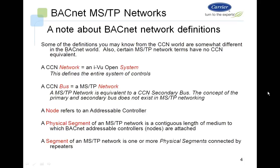We will look at some network definitions on the BACnet side as compared to the CCN side. A CCN network is equivalent to an iView Open system — this defines the entire system of controls for a given installation. A CCN bus is equivalent to an MSTP network, which is equivalent to what we've typically referred to as a CCN secondary bus. The primary 485 bus doesn't exist in the BACnet world; the best correlation would be the BACnet IP network.